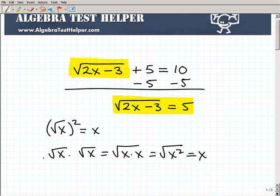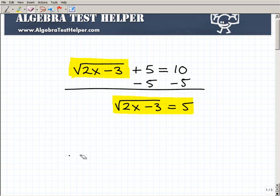So I kind of just use this basic example and did it the long way just to convince you that if I square the square root of something, I just get back to whatever is inside the radical. So knowing that, what I want to do is to get rid of this radical.